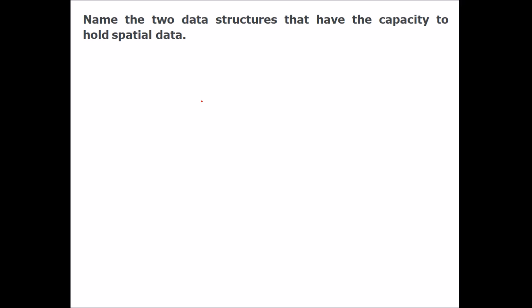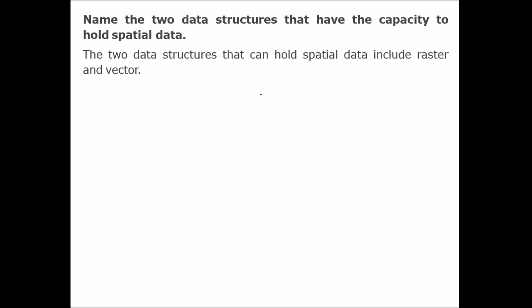Name the two data structures that have the capacity to hold spatial data. The answer includes raster and vector.